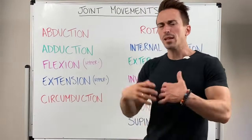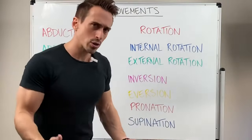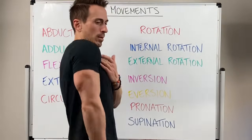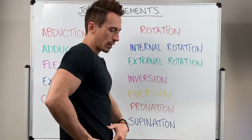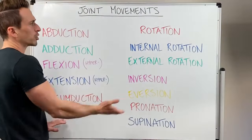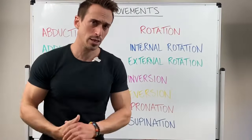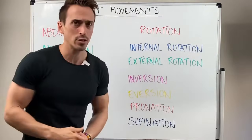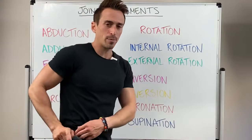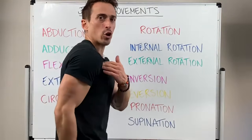Circumduction is moving the joint in a circle around its axis. Usually what we're talking about here are ball and socket joints — so the hip and shoulder predominantly. When we look at the shoulder, circumduction is moving around in a circle. Circumduction for the hip — moving around in a circle. You may be thinking, how is circumduction different to rotation? The difference is circumduction traces a circle. Rotation isn't necessarily in a circle — it's just moving within the confines of that axial plane. If you put a pen at the joint on paper, circumduction would draw a circle, whereas rotation would just draw a dot or a line.